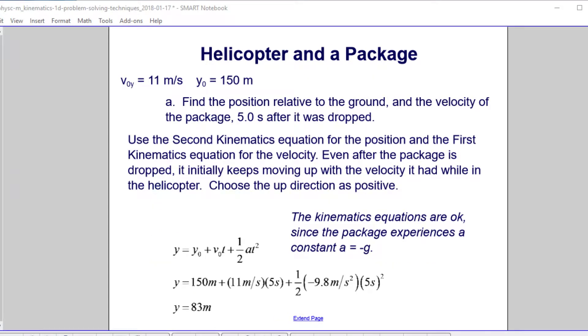Find the position of the package relative to the ground and its velocity 5 seconds after it was dropped. We're going to use the second kinematics equation and the first kinematics equation for the velocity. Even after the package is dropped, it initially keeps moving up with the velocity it had while in the helicopter. That's its v0. We're going to choose the up direction as positive.